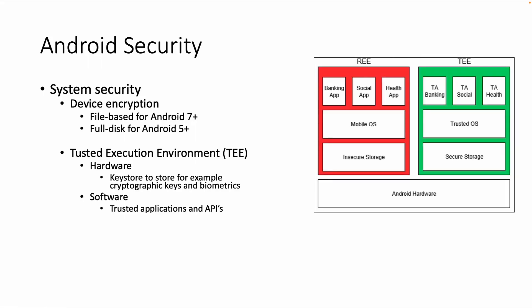Another part of system security is the trusted execution environment. A trusted execution environment is a secure area within a device's main processor that is designed to provide and protect the execution environment for sensitive code and data. In this picture you can see there is a rich execution environment, which is a non-trusted environment, and a trusted execution environment. The TEE gives more protection, takes care of isolation based on the operating system, and protects sensitive data against potential vulnerabilities.